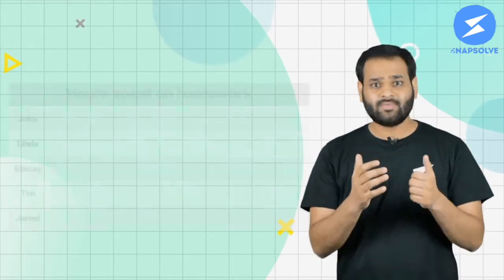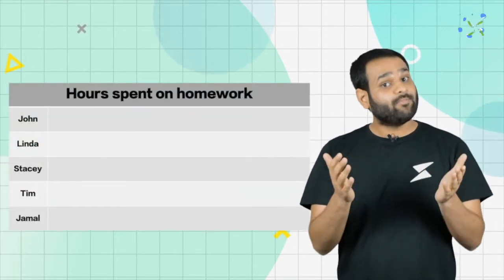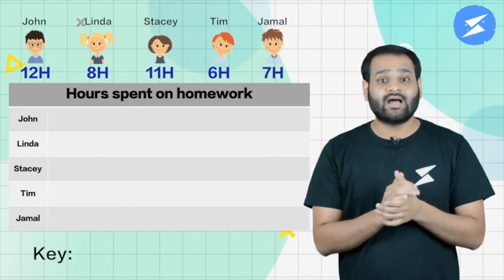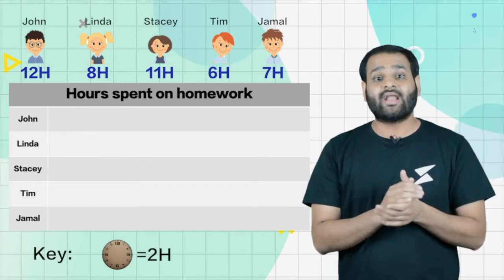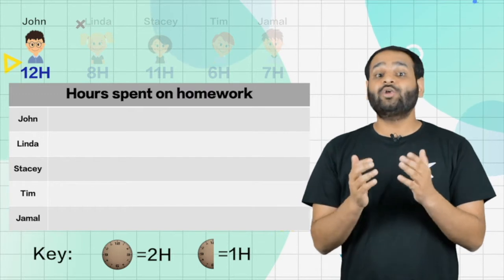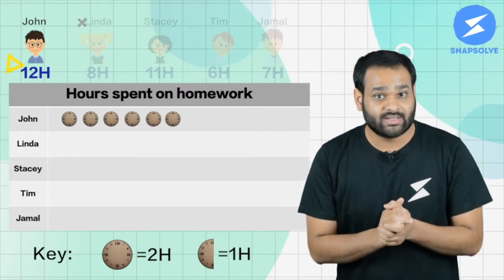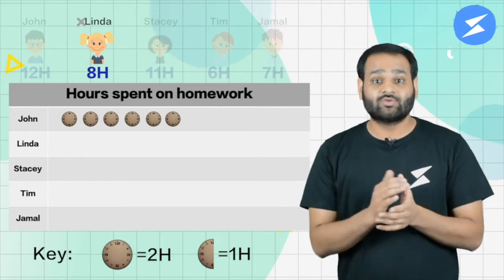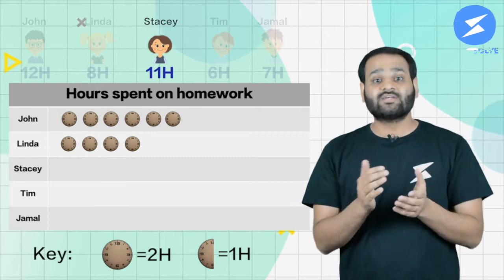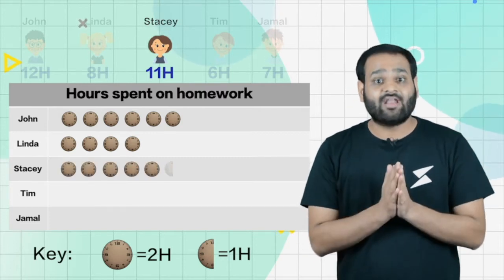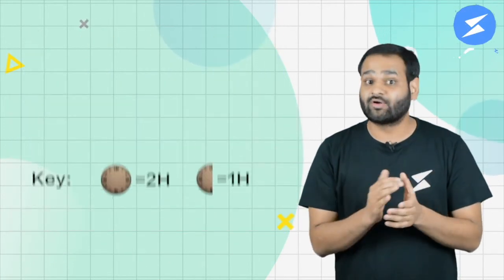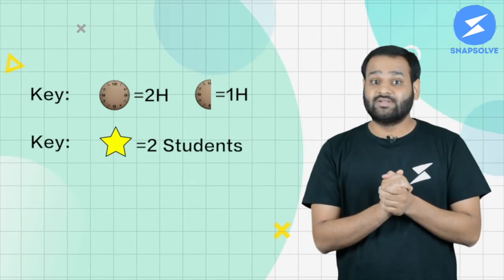Now let's take one more example. Suppose we want to represent the number of hours studied by five students. The key is: one clock picture represents two hours, and one half-clock picture represents one hour. The first student spent 12 hours, so there are six clock pictures. The second student spent eight hours, so there are four clock pictures. The third student studied 11 hours, so we need five full clock pictures and one half-clock picture, and so on.